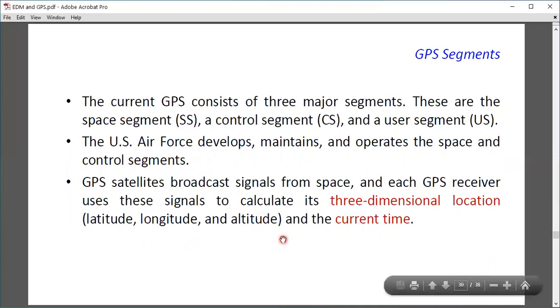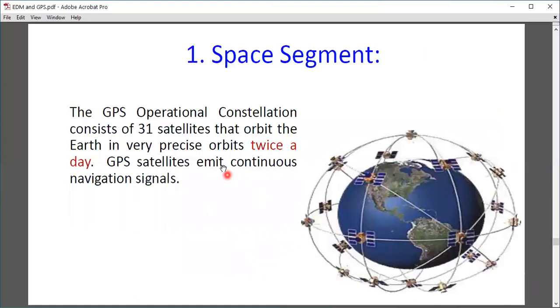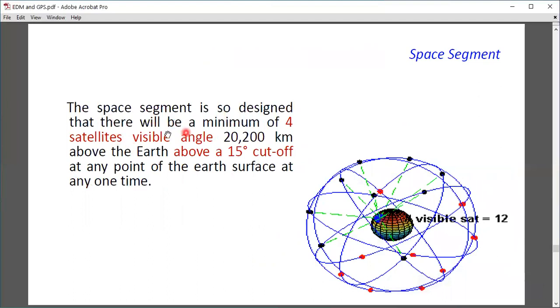The GPS satellites broadcast signals from space and GPS receivers use these signals to calculate three-dimensional location: latitude, longitude, and altitude, and the current time. The GPS operational constellation consists of 31 satellites that orbit the Earth in very precise orbits twice a day. The space segment is designed so there will be a minimum of 4 satellites visible at any point above a 15-degree cut-off.